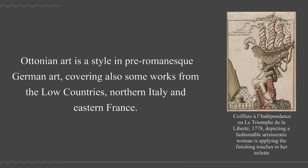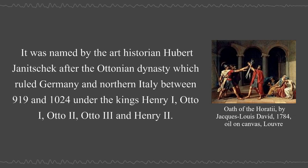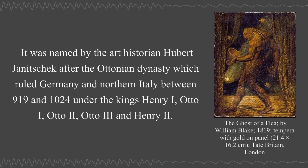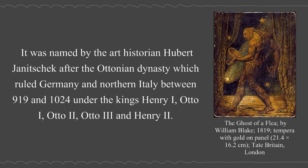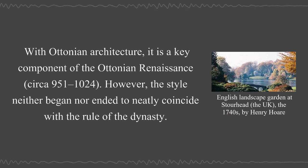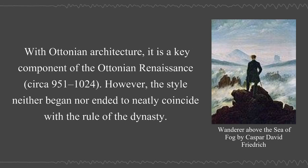Ottonian art is a style in pre-Romanesque German art, covering also some works from the Low Countries, Northern Italy, and Eastern France. It was named by the art historian Hubert Janitschek after the Ottonian dynasty, which ruled Germany and Northern Italy between 919 and 1024, under the Kings Henry I, Otto I, Otto II, Otto III, and Henry II. It is a key component of the Ottonian Renaissance, circa 951–1024. However, the style neither began nor ended to neatly coincide with the rule of the dynasty.